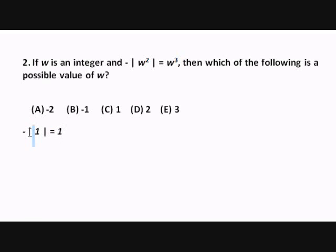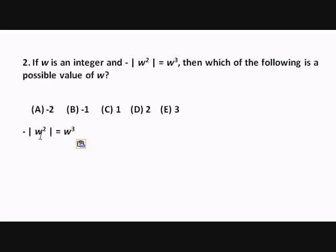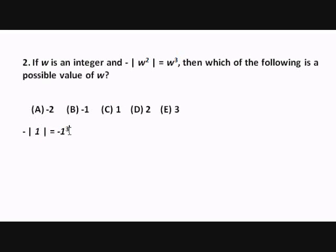But when I remove the absolute value sign here, we see that we get negative one equals one. That ain't right. So we don't want to assume anything — we're just going to double check and see what happens when we plug in negative one. Negative one squared equals negative one cubed. Negative one squared is one. Negative one cubed is negative one. And my final step — remove the absolute value signs. And we have a winner. The correct choice is B.